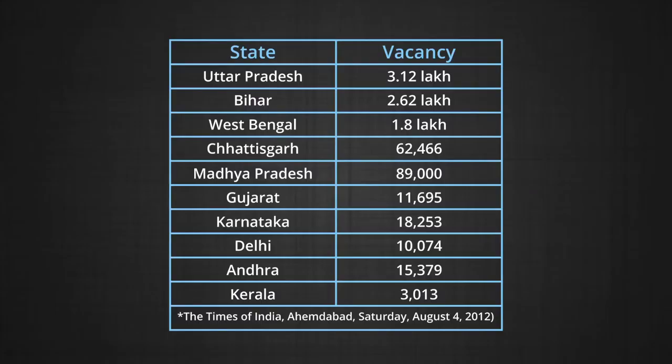Even the less-than-a-decade-old Indian Institute of Science Education and Research with 5 branches has been afflicted with faculty crunch — 131 vacancies out of a total strength of 518. But it is school education that is facing the real heat. Throughout the country, there is a vacancy for 12.59 lakh teachers in primary and upper primary schools. Uttar Pradesh leads with 3.12 lakh vacancies against a sanctioned strength of 8.18 lakh. Bihar has not been able to fill 2.62 lakh teaching positions, whereas West Bengal has 1.8 lakh vacancies.